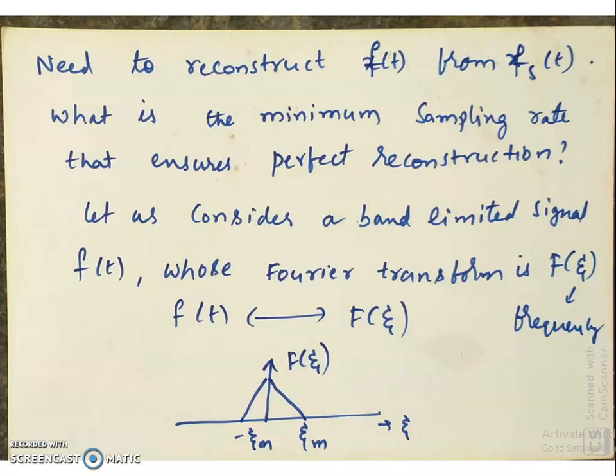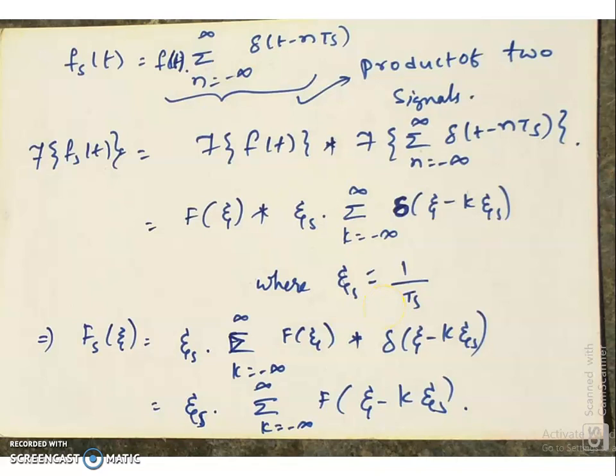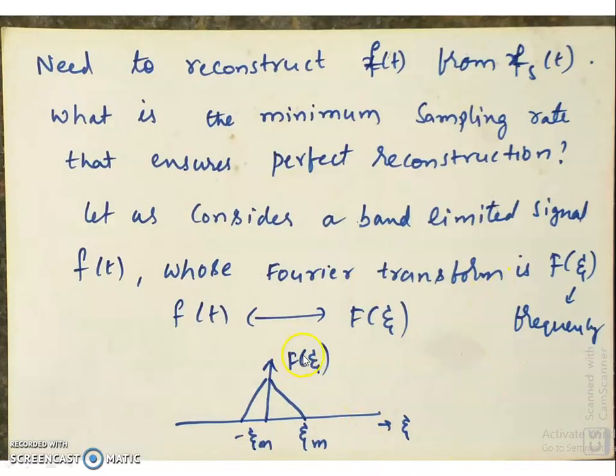Let us consider Fs of t and see what the spectrum of Fs of t is in terms of the spectrum of F of t. We have assumed that the spectrum of F of t is F of zeta. You may wonder why I have considered a triangular spectrum here — there is nothing special about the shape; the shape of the spectrum can be anything, it can be arbitrary. I drew a triangular shape simply because it is easy to draw.